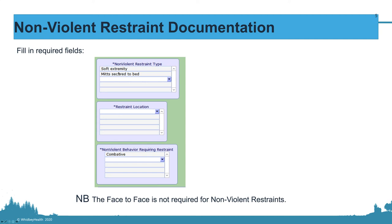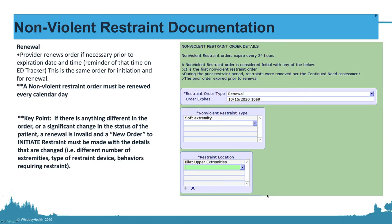You also need to fill in the type of restraints and what behavior is requiring them. Only violent restraints — which include chemical restraints, holds, locking restraints, and seclusion — require the face-to-face documentation; nonviolent restraints do not. You must renew the nonviolent order prior to its expiration every 24 hours. If there are major changes to the patient's condition or situation, it requires a new order rather than a renewal.